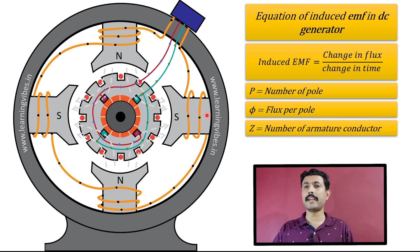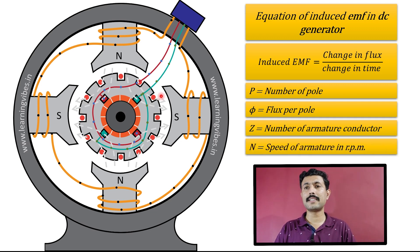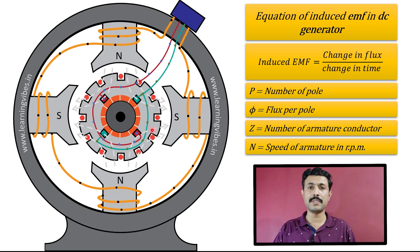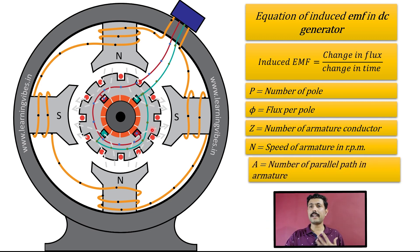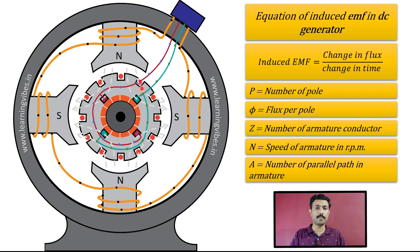The next parameter is Z, which is equal to the total number of conductors. You can see that there are various conductors in the armature, and the total number of conductors is denoted by Z. Next is N, which is equal to the speed of the armature — the rate at which our rotor rotates — measured in revolutions per minute. The next is A, which is the number of parallel paths in the armature. In a lap-wound machine, the number of parallel paths equals the number of poles. In a wave-wound machine, the number of parallel paths is 2.